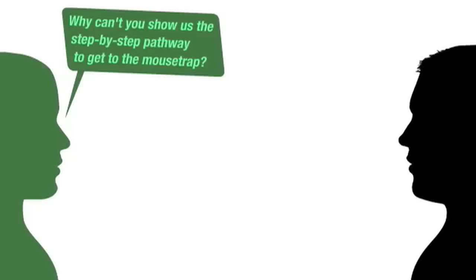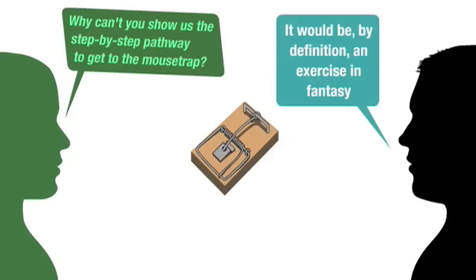I was asked, why can't you show us the step-by-step pathway to get to the mousetrap? Showing a step-by-step pathway to get an object we all agree didn't evolve naturally through a step-by-step process would be, by definition, an exercise in fantasy.